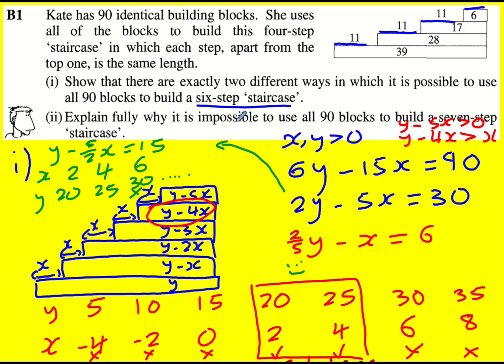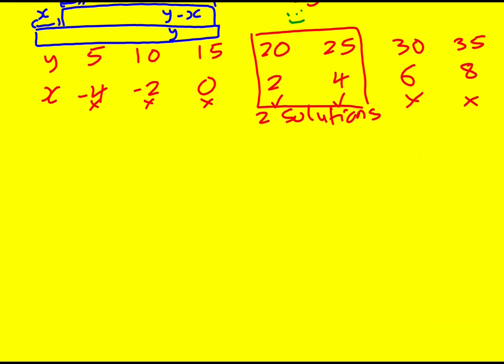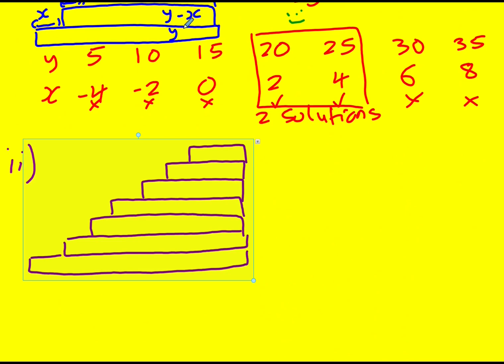Then I'm asked to explain why it's impossible to use all 90 blocks to make a seven-step staircase. So in the same kind of way, I'm going to start with y and then each one of these is going to be x.